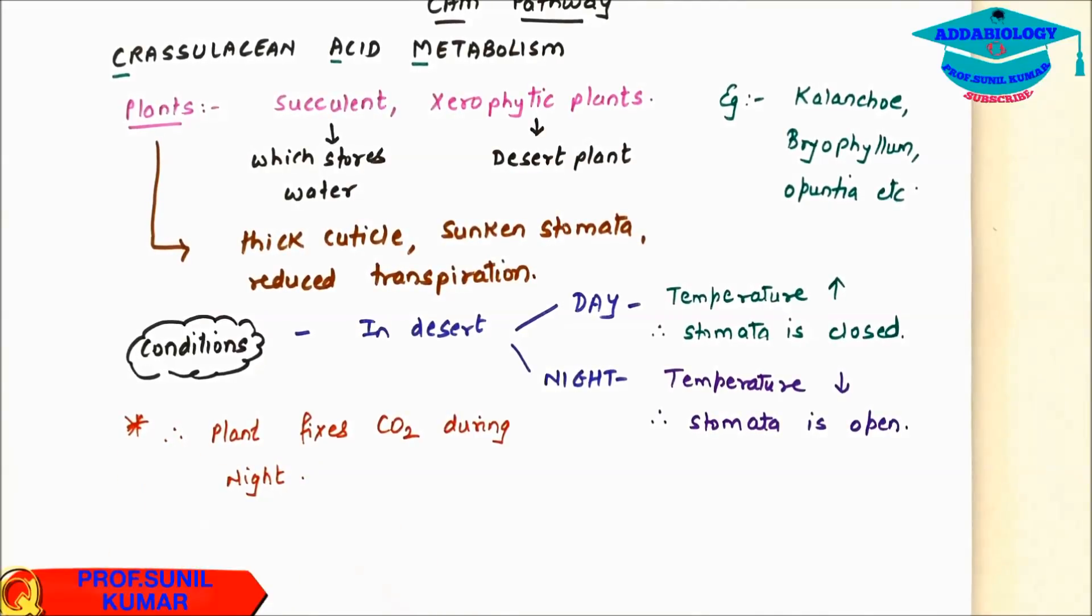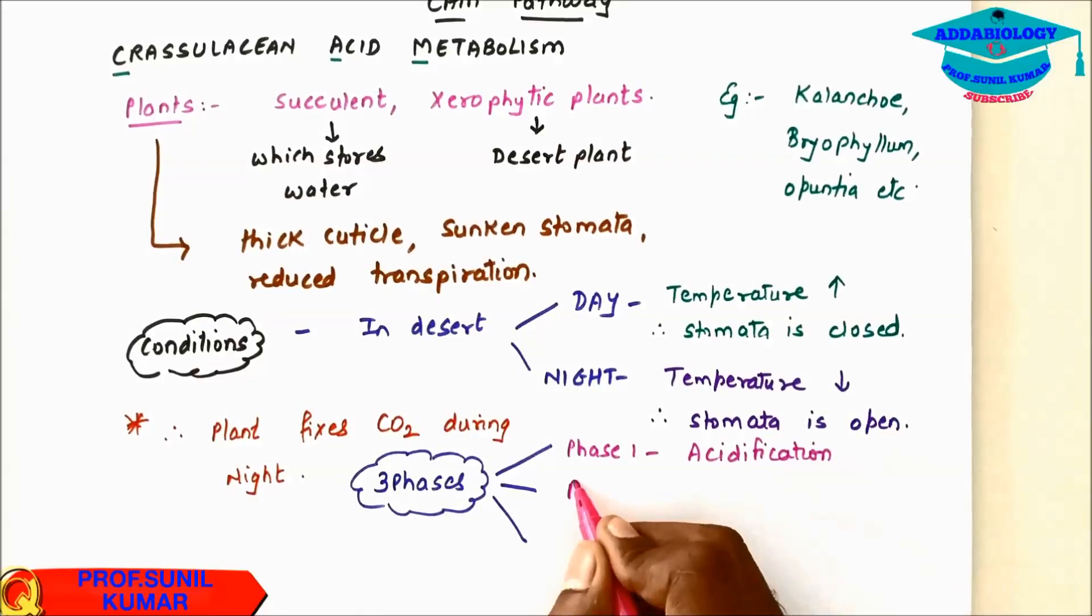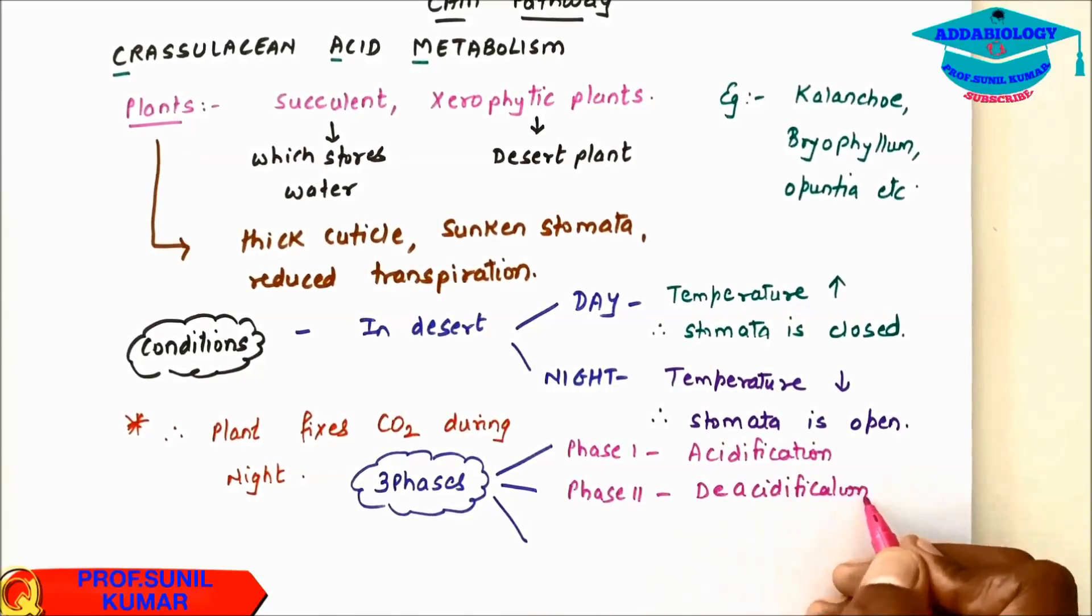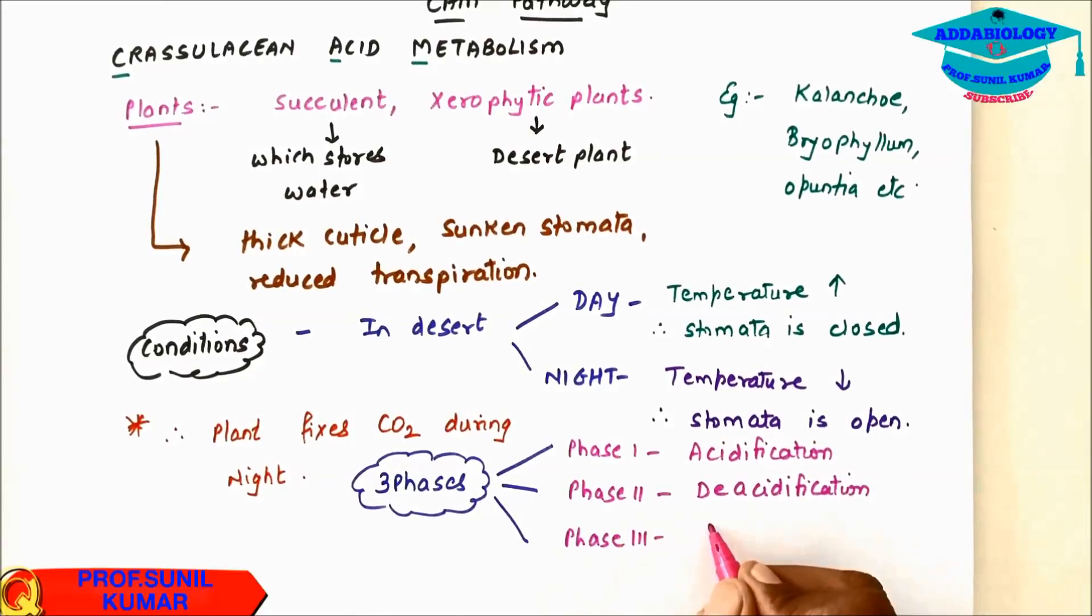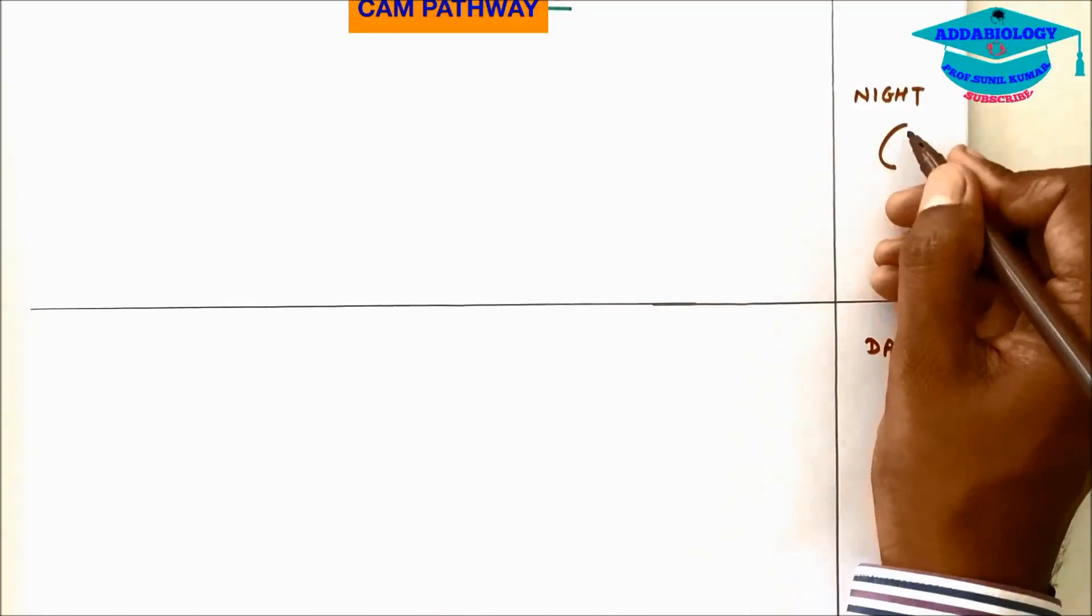CAM pathway takes place in 3 phases. Phase 1 is acidification. Phase 2 is deacidification. Phase 3 is sugar formation. So in phase 3 sugar formation takes place. Let's understand the CAM pathway.